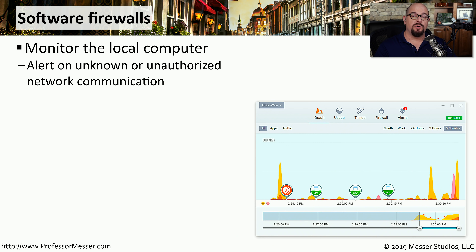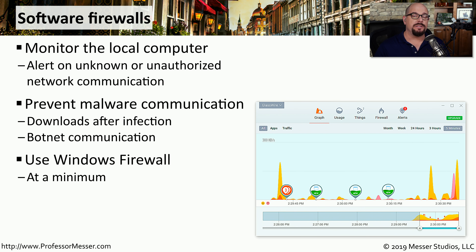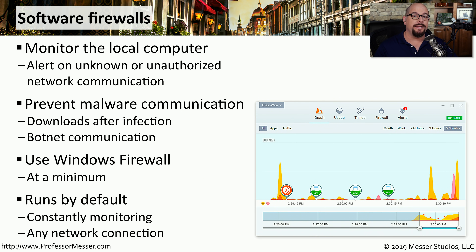It's also common to run personal firewalls or software-based firewalls on a workstation. This allows you to constantly monitor any outbound or inbound traffic to make sure only the correct traffic flows are occurring. This is especially useful for monitoring outbound communications — if malware gets infected and needs to communicate out, you can stop it right at the personal firewall. There's a personal firewall built into Windows called Windows Firewall, or in Windows 10 it's called Windows Defender Firewall, along with many third-party options. It should be running by default, always on, and always monitoring for unauthorized traffic flows.